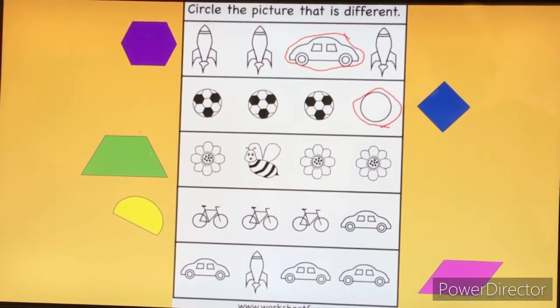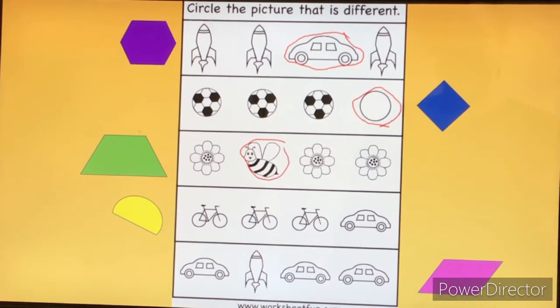Let's move down to the green trapezoid. Which picture is different? Did you find the bee? It's not the same as the flowers.